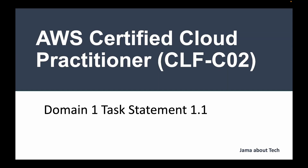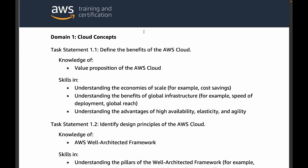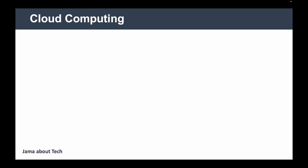AWS Cloud Practitioner CLF-C02 exam domain 1, task statement 1.1. This task statement from the AWS exam objectives asks us to define the benefits of the AWS cloud — more specifically, knowledge of the value proposition of the AWS cloud and skills in economies of scale, benefits of global infrastructure, and advantages of high availability, elasticity, and agility.